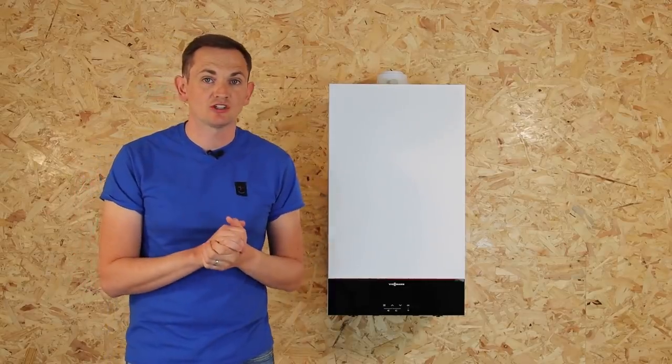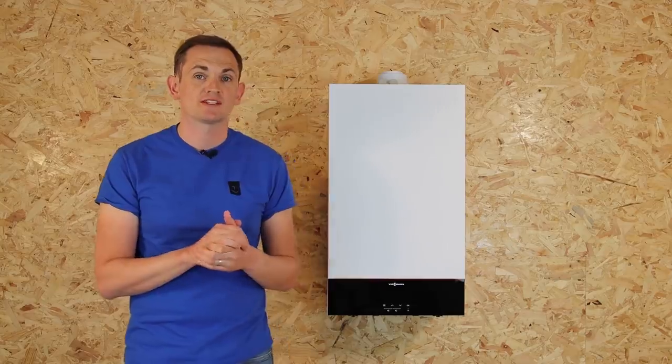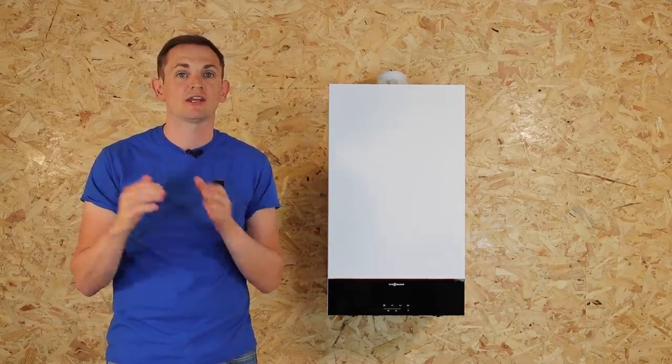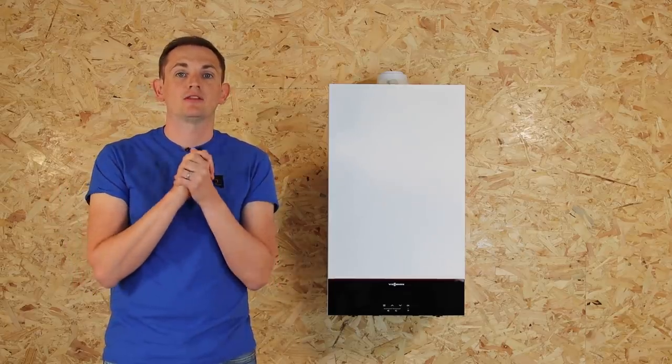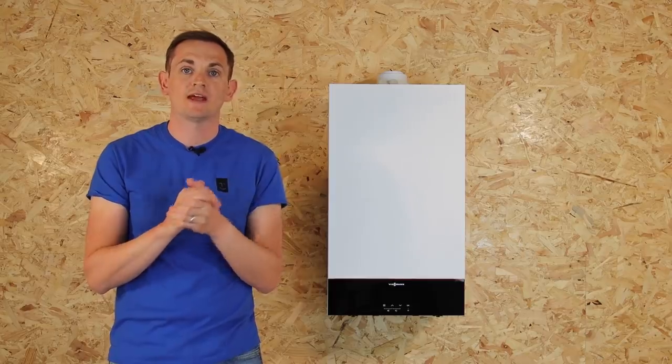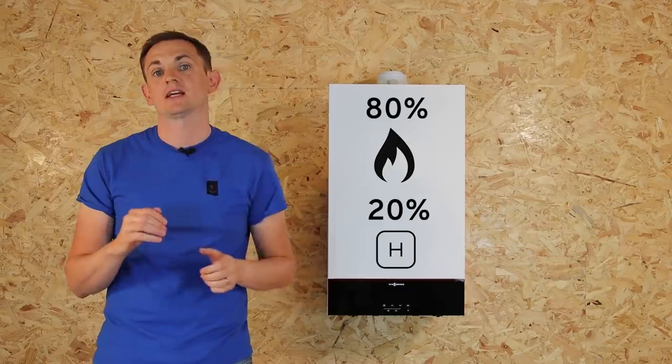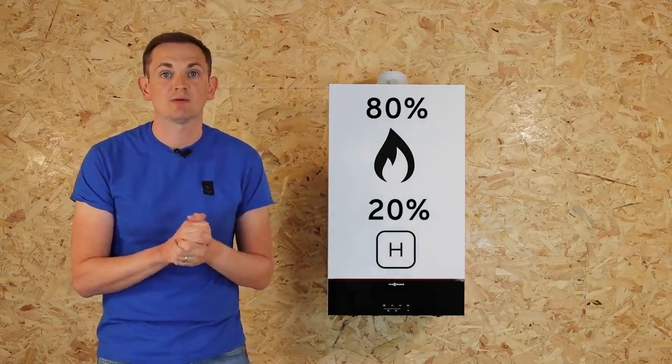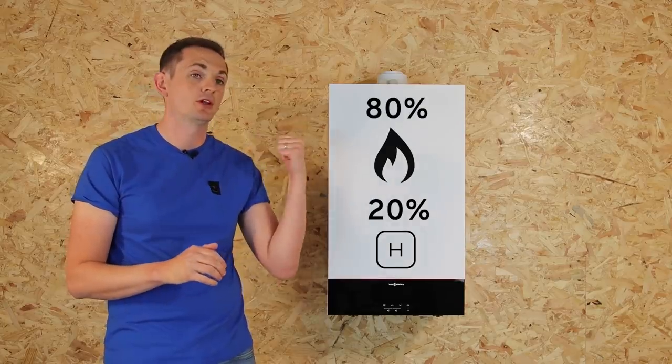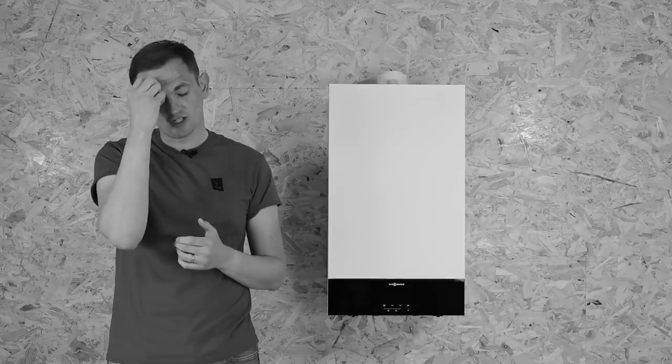So one of the standout features of this product and definitely something that separates it from the competition is the fact that it's built and ready to accept a 20% mix of hydrogen and natural gas. Now, this scheme is being launched in certain areas of the UK at the moment where they're going to supply properties with this mix of 80% natural gas and 20% hydrogen. To use the scheme or to benefit from the scheme, you'll need a boiler that accepts that. This boiler is the one for you.